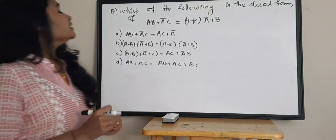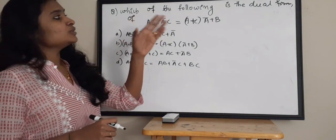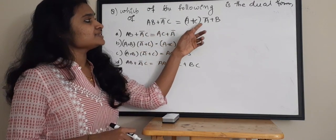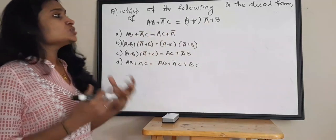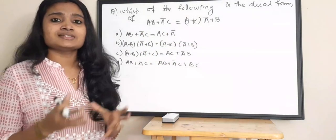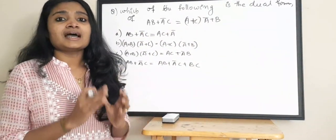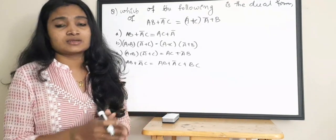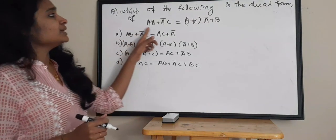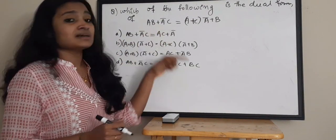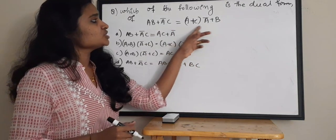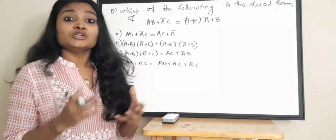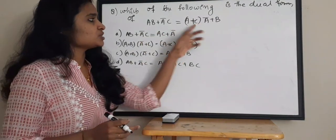Let's see the first question: which of the following is the dual form of AB plus A-bar C equals A plus C into A-bar plus B? In the dual form, we are converting AND gates into OR gates or OR gates to AND gates. Simply, the multiplication terms are converted as summation terms and the summation terms are converted as multiplication terms.